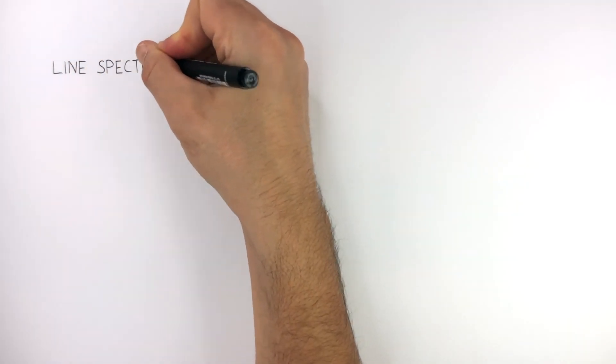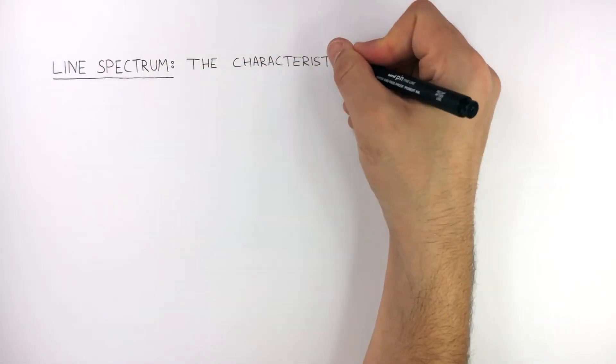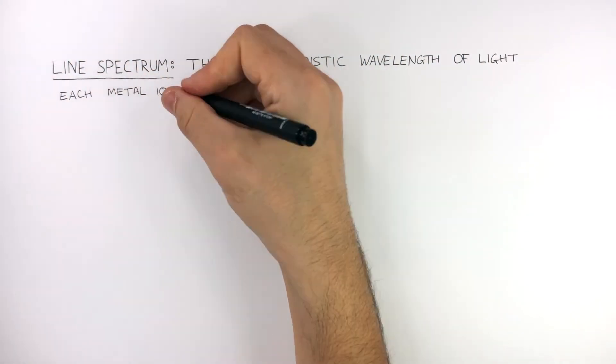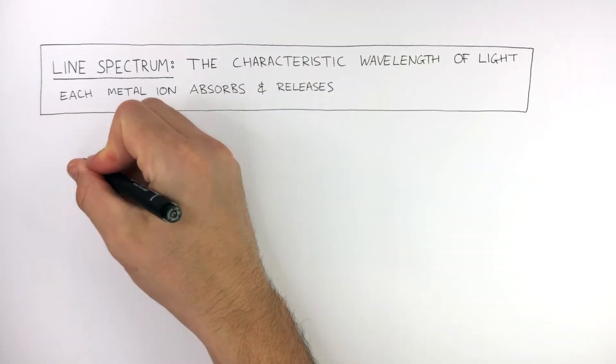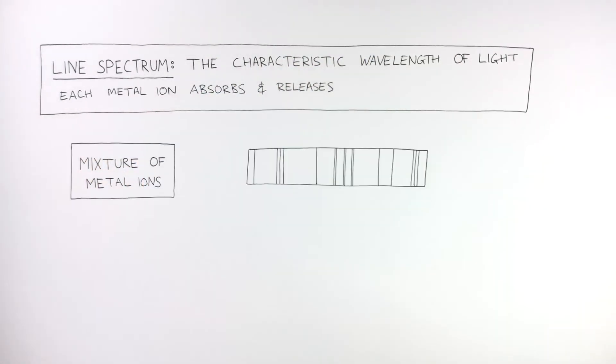A line spectrum shows the characteristic wavelengths of light each metal ion absorbs and releases. A mixture of metal ions may produce a line spectrum which looks something like this.